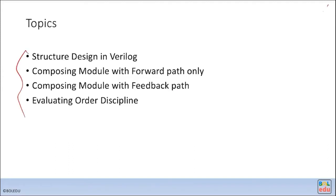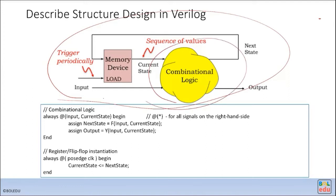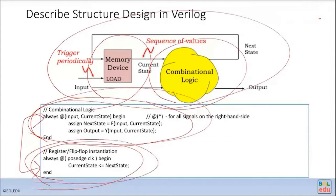There are four topics to introduce here. First, a primitive idea on structural design: a typical structural design is a state machine — you have combinational logic and a memory device (flip-flops), which together basically cover all kinds of structural design. When writing this code, we like to separate the combinational logic from the sequential flip-flop instantiation, and when we write the C code, we will follow a very similar structure.